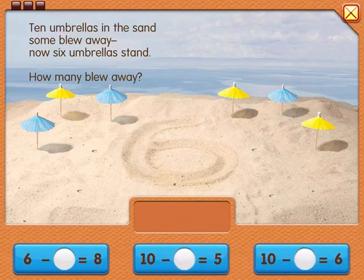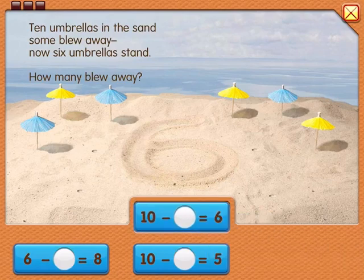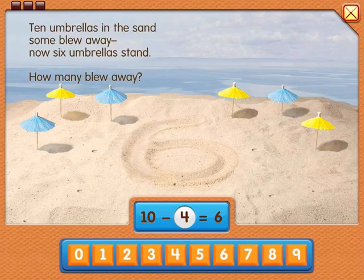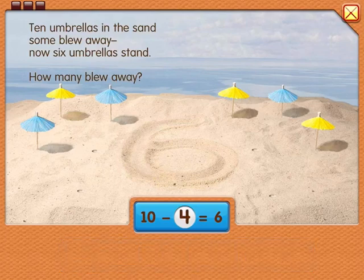Let's make an equation to solve this. Now let's solve the equation. How many blew away? Four. Yes, correct. Ten minus four equals six.